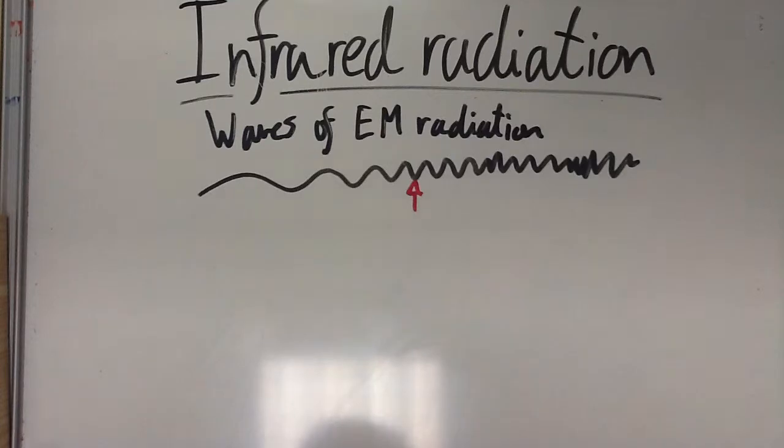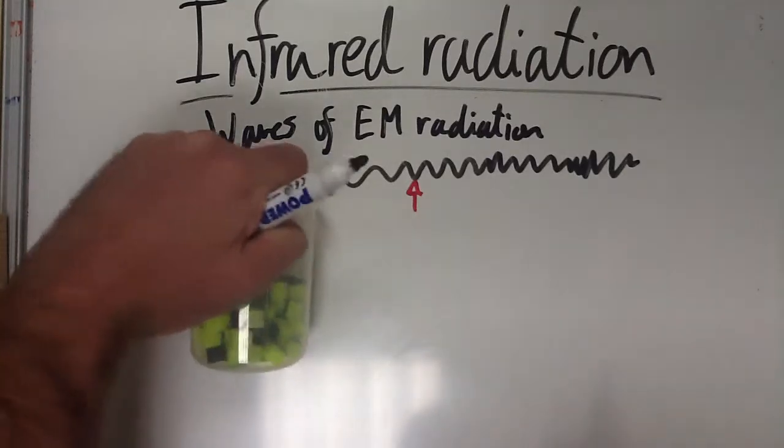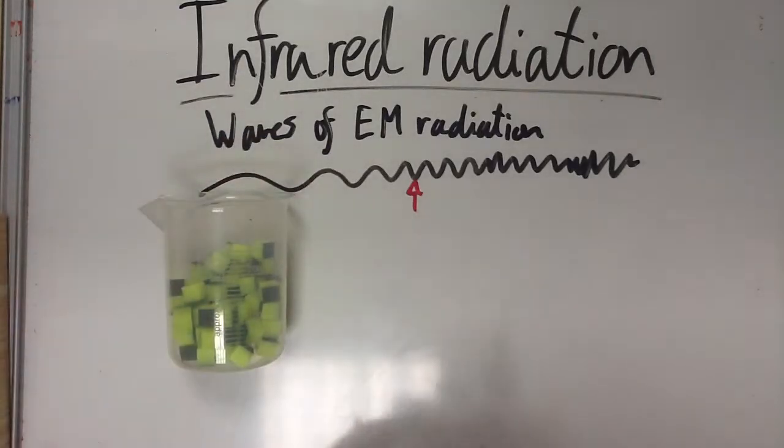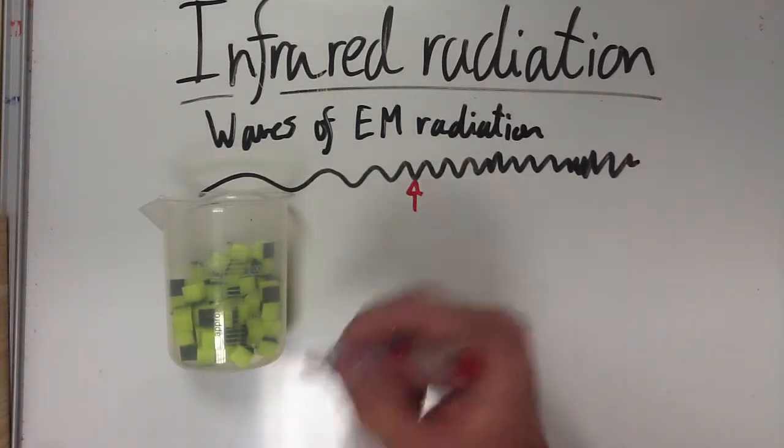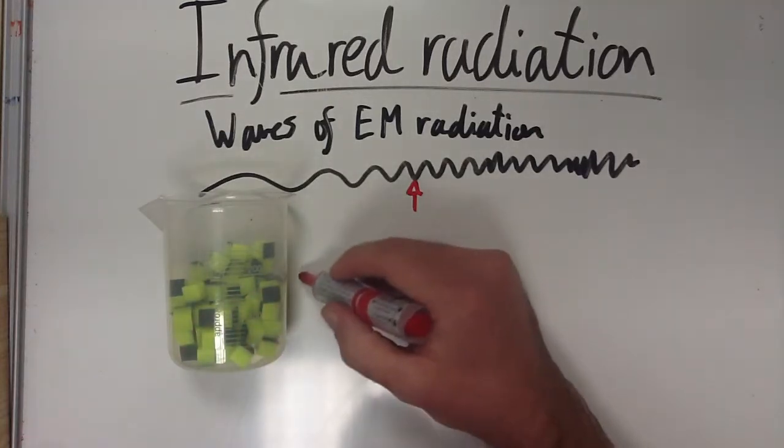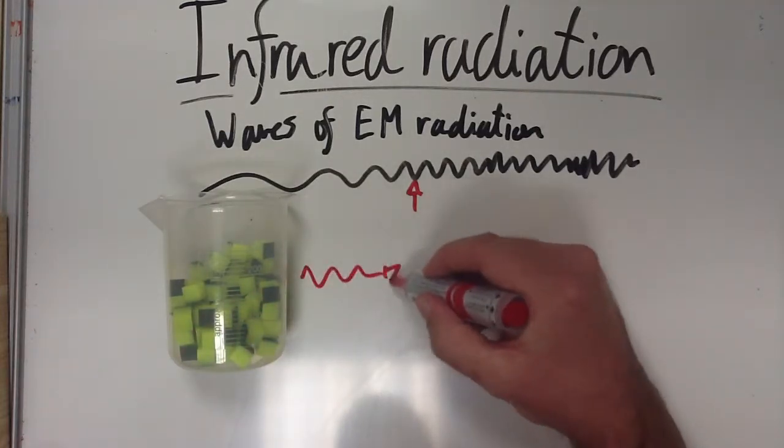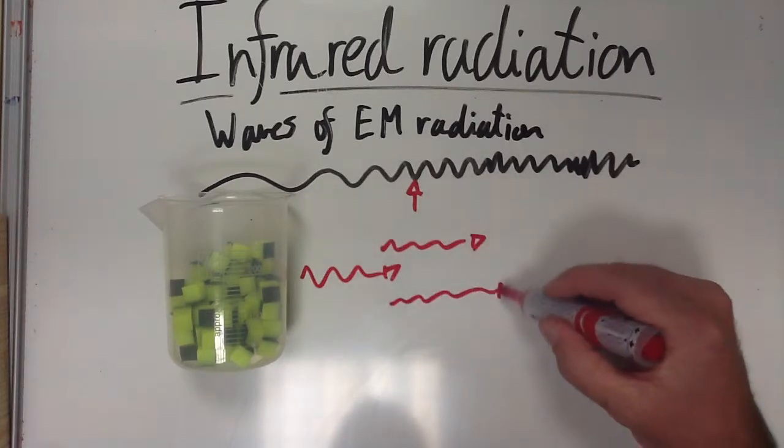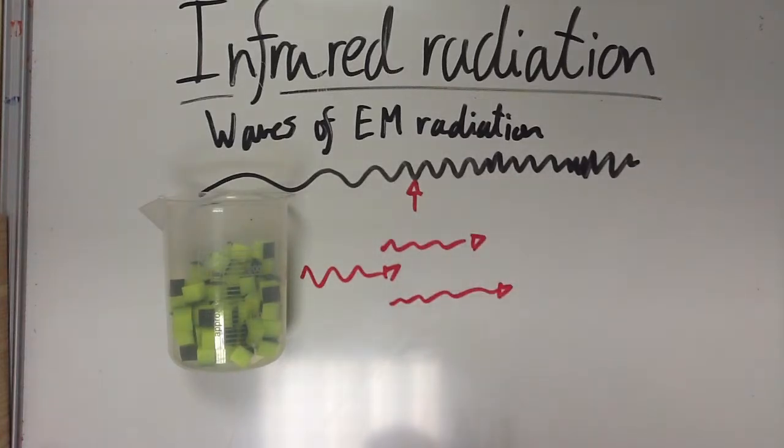So if we take for example a model for a cup of hot liquid here, although we have convection happening in the liquid as well, it will also radiate heat outwards with little waves of electromagnetic energy. So this infrared radiation is emitted.